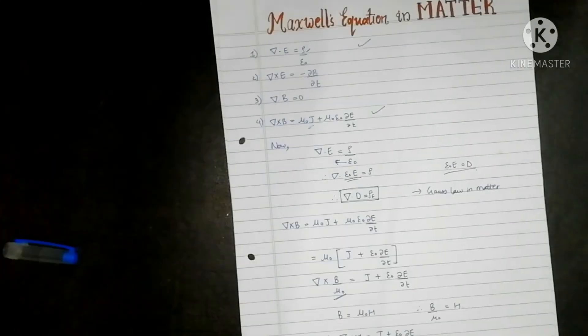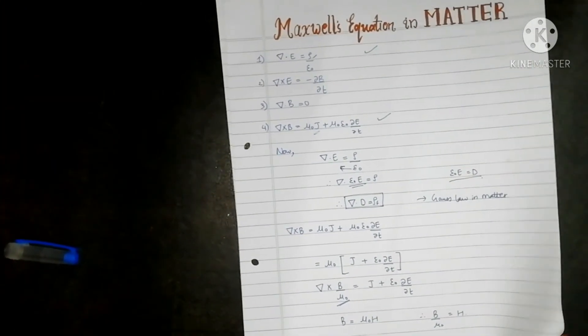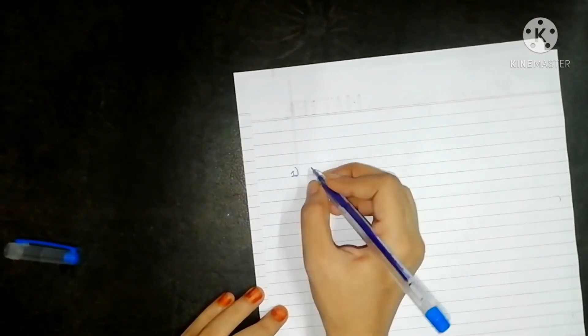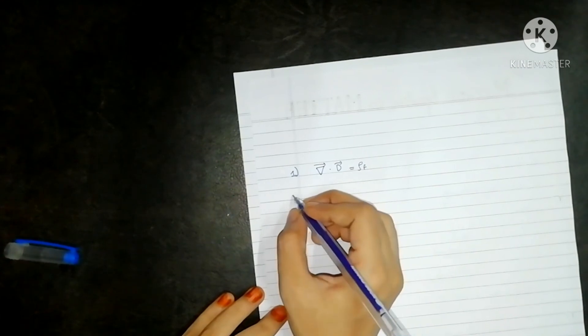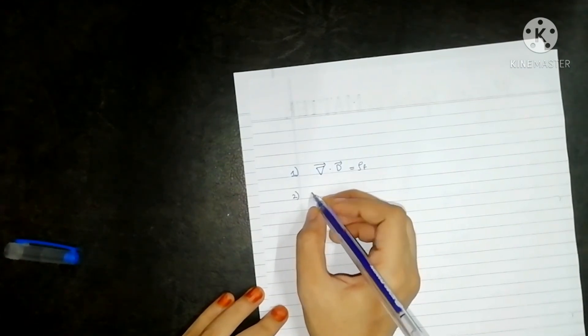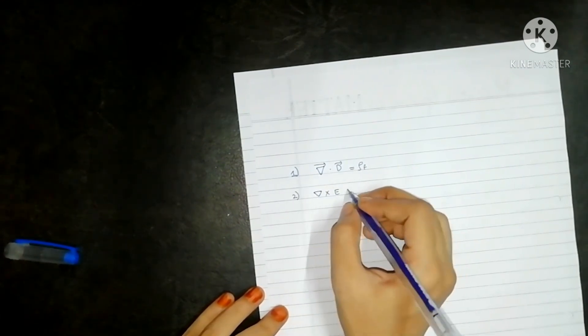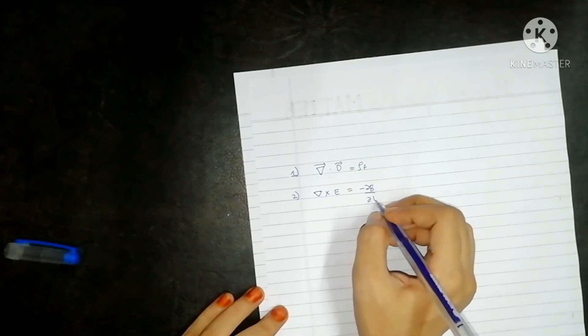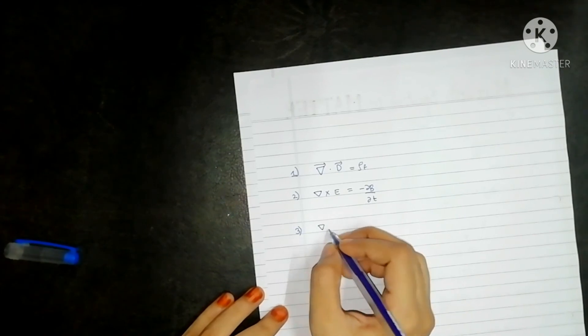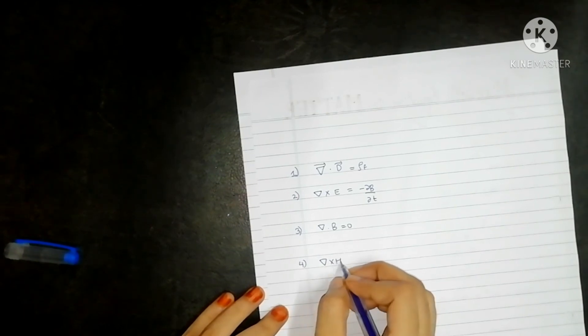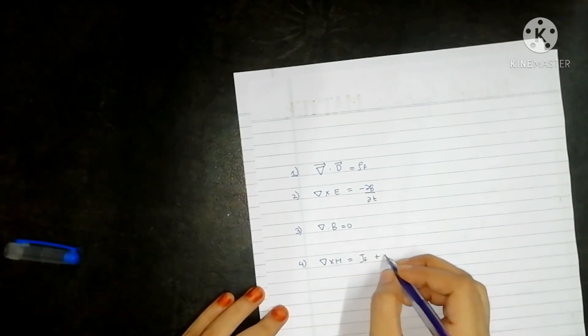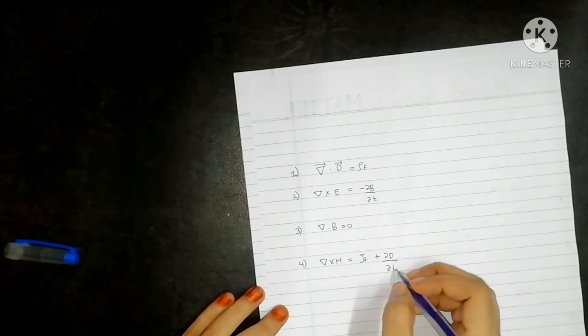So let's write down the four Maxwell's equations in matter. The first Maxwell's equation in matter is del dot D is equal to rho f. The second equation is del cross E is equal to minus dou B by dou t. The third equation is del dot B is equal to zero. And the fourth equation is del cross H is equal to Jf plus dou D by dou t. These four are Maxwell's equations in matter.